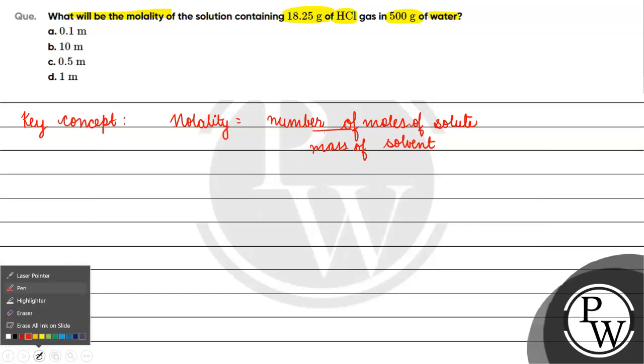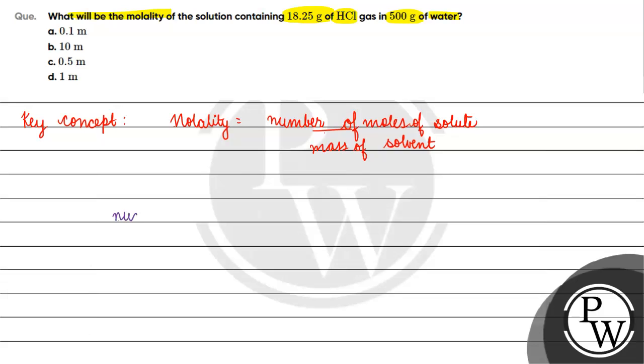If we talk about number of moles of solute, in this case HCl gas is equal to mass of HCl gas by its molar mass. HCl molar mass is 36.5 gram per mole.